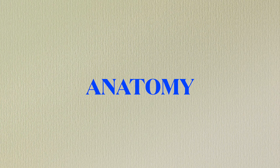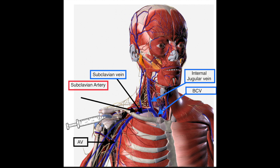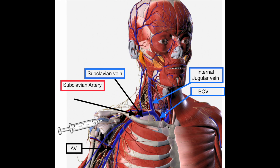Anatomy of the subclavian vein: The subclavian vein is a deep vein that is very commonly used for insertion of a CVP line in the operation theater or ICUs. It is a continuation of the axillary vein and passes behind the clavicle to meet the internal jugular vein, forming the brachiocephalic vein. The brachiocephalic vein continues as the superior vena cava, which ultimately drains into the right atrium.